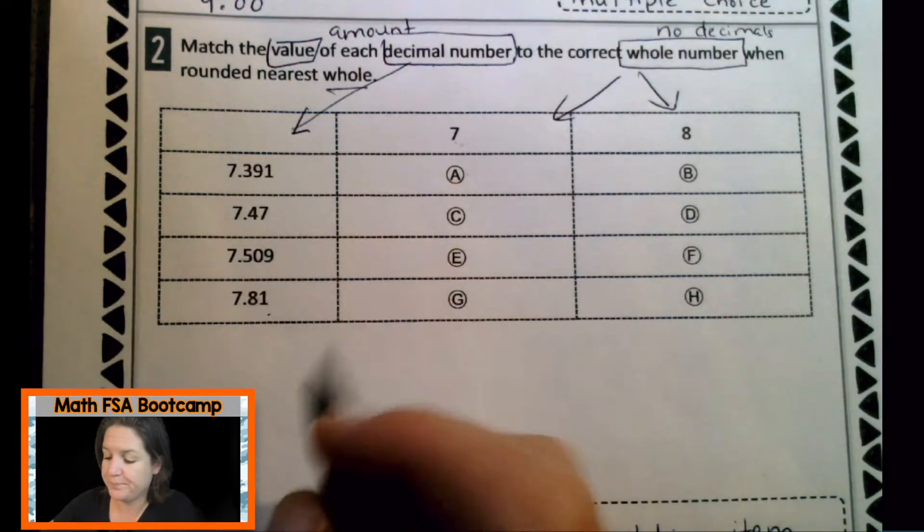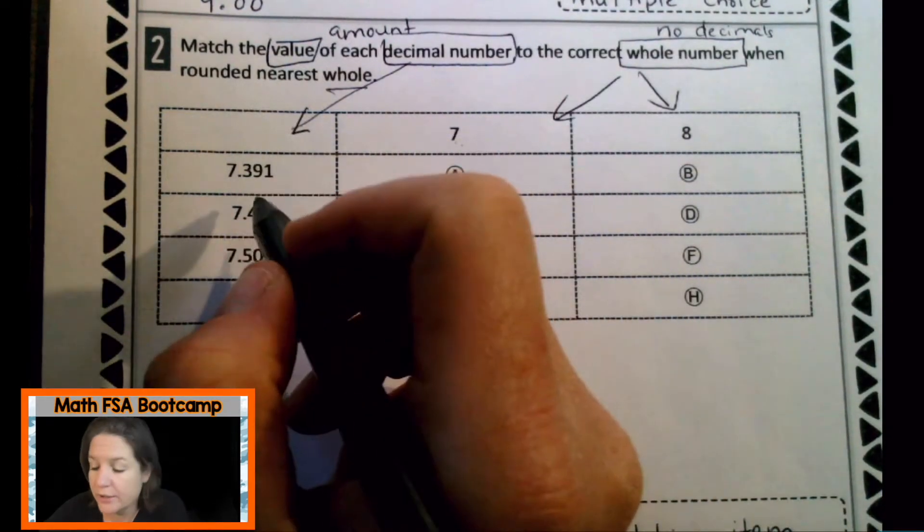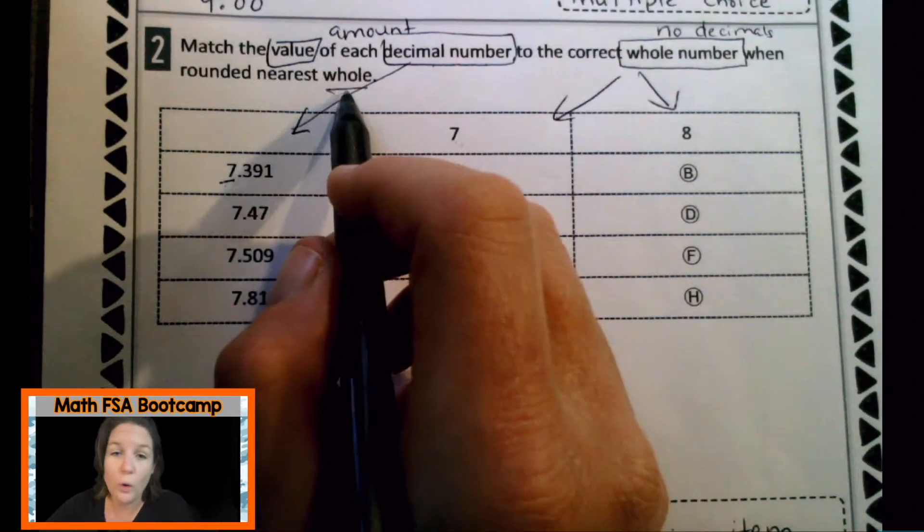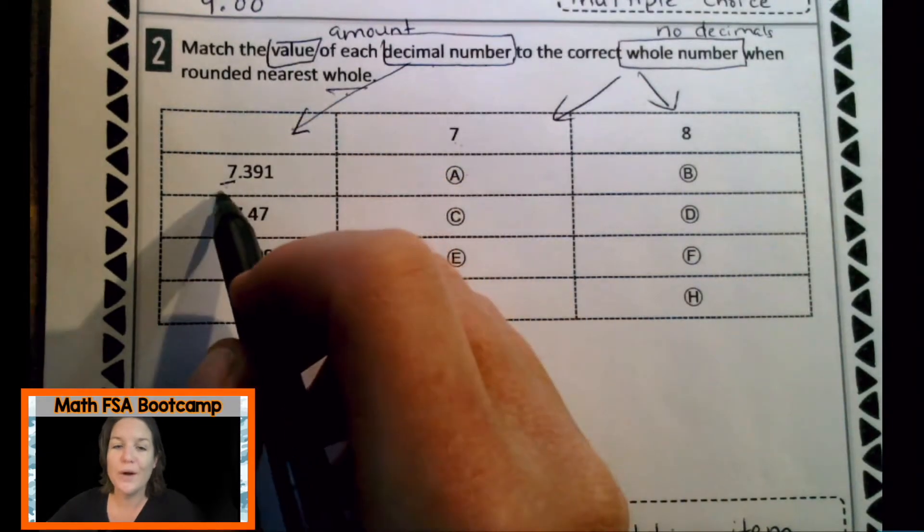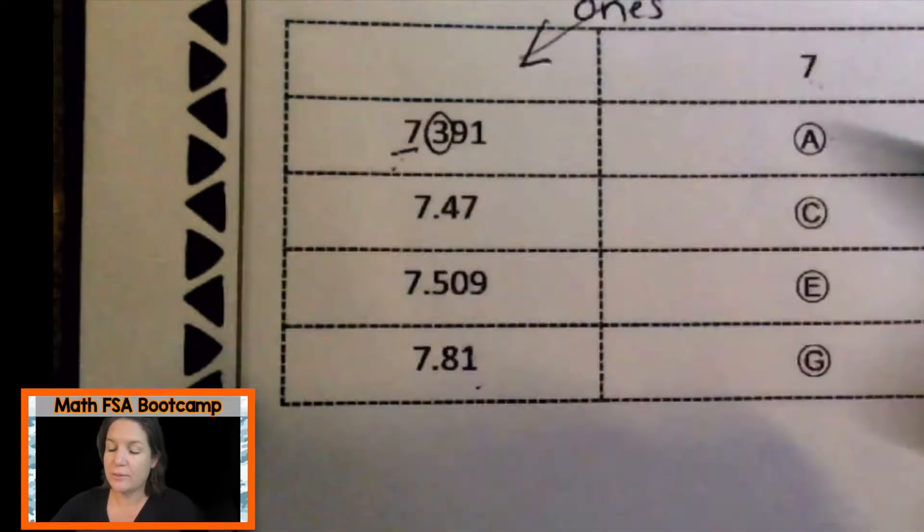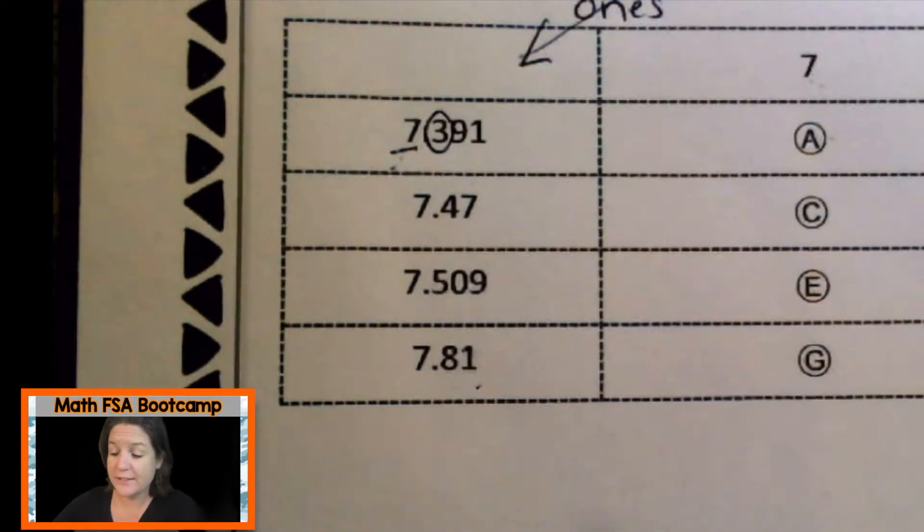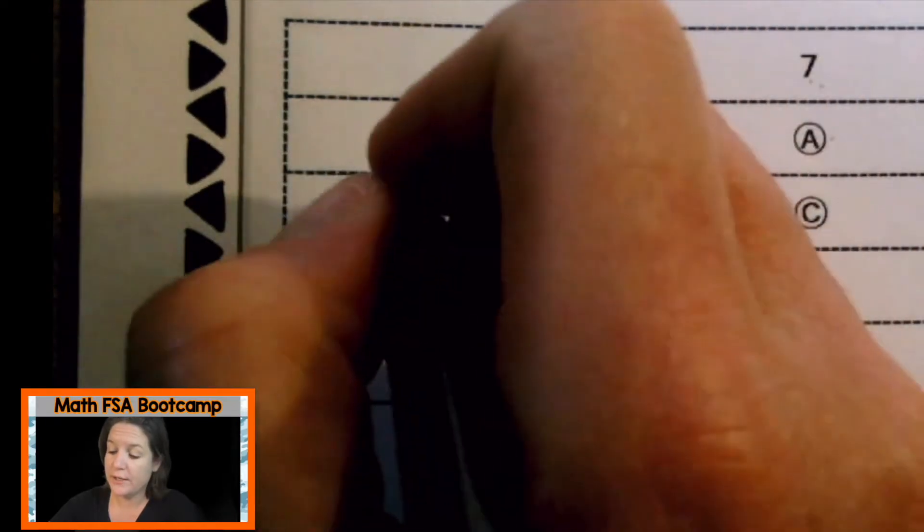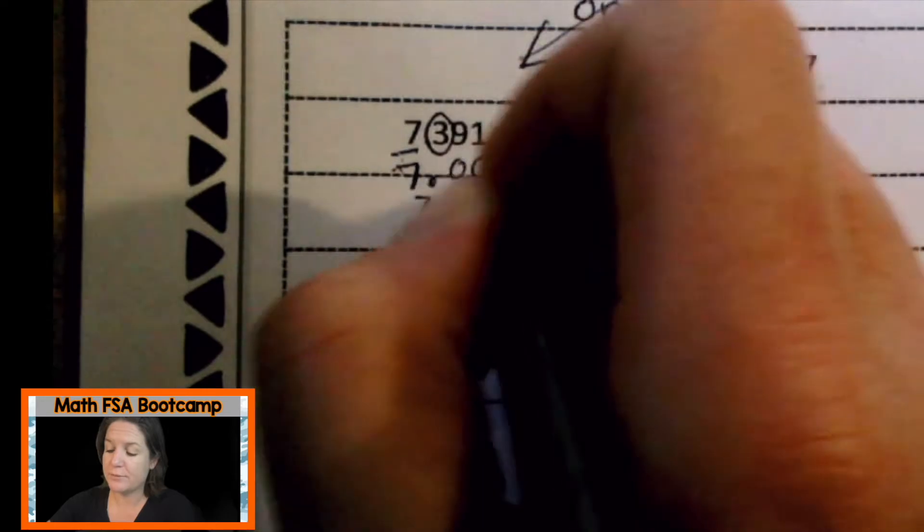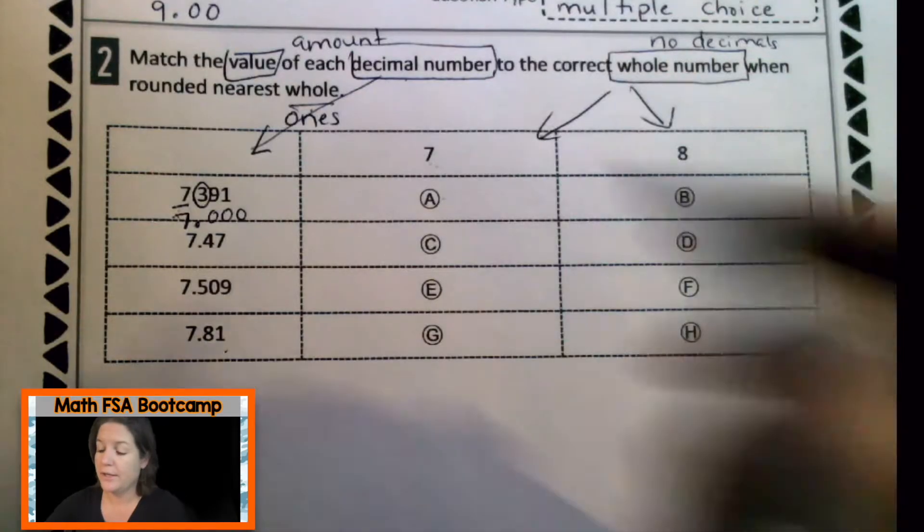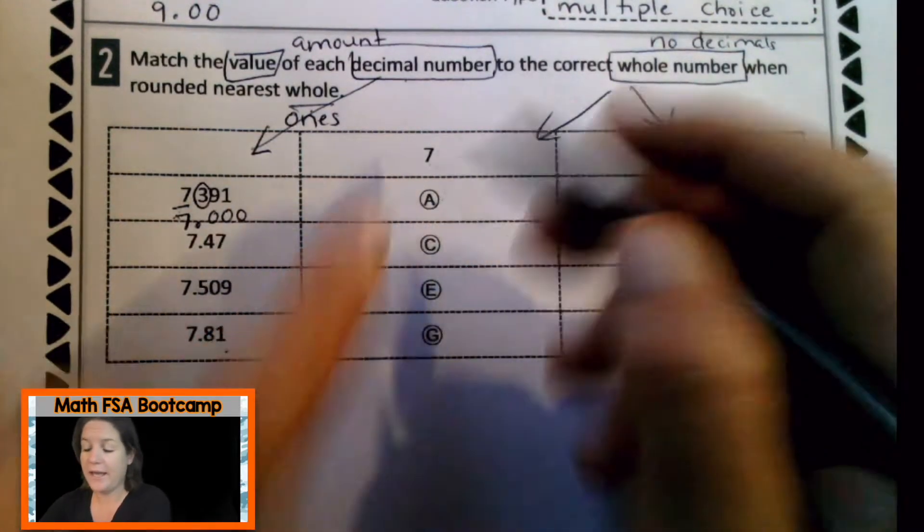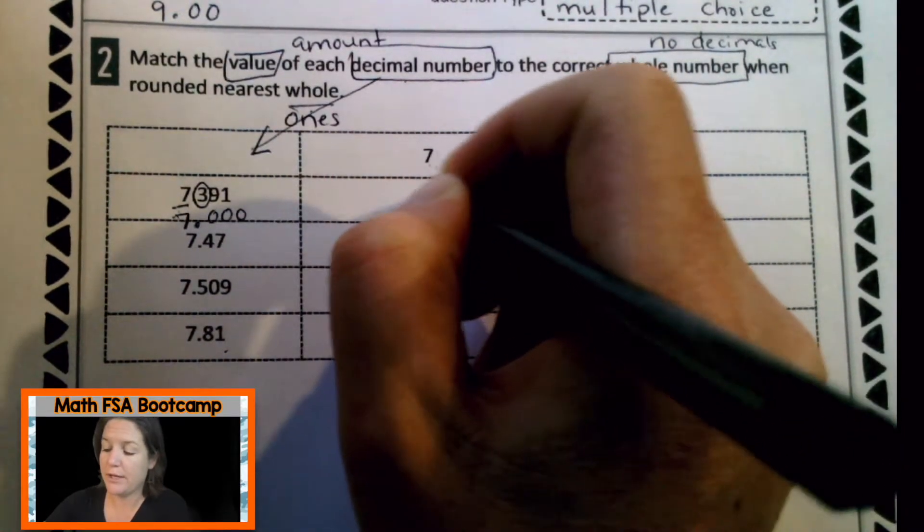Okay. Let's start with this one. I can do it right there. When you round, find and underline the place. It says round to the nearest whole. So I'm going to underline the ones place again. I should have written that down. Ones. Spotlight to the right, decide the digits fate. That is four or less. So we just keep it the same and everything after becomes zero. That means that our answer is seven. So which would be A. They meet at A, bubble in A.